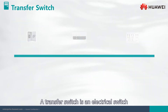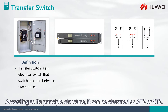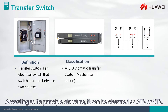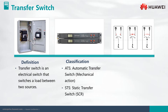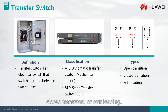A transfer switch is an electrical switch that switches a load between two sources. According to its principal structure, it can be classified as ATS or STS. According to its switching mode, it can be classified as Open Transition, Close Transition, or Soft Loading.